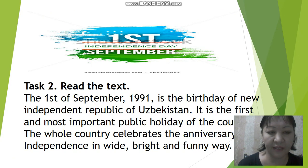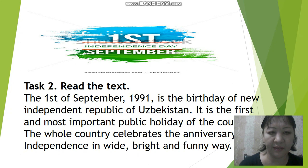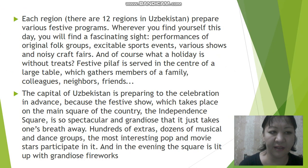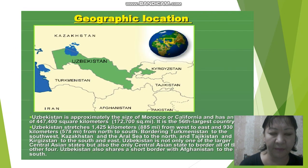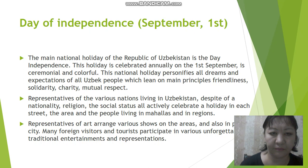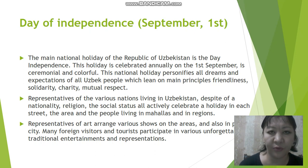Next, let's do Task 2. You should read the text, and after reading the text you will be able to get more information about Independence, Geographic Location, Government, Constitution, and so on. There are 12 regions in Uzbekistan and they celebrate Independence Day every year. Independence Day is the main national holiday of our Republic, which is celebrated annually on the 1st of September.